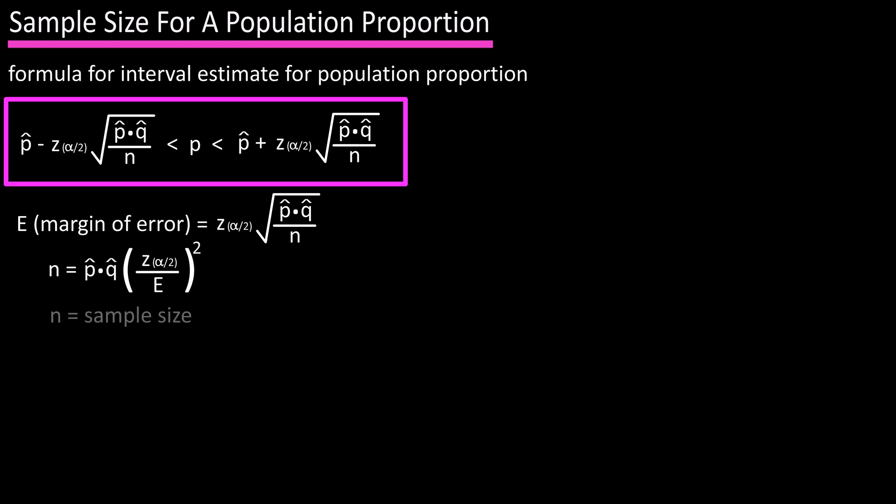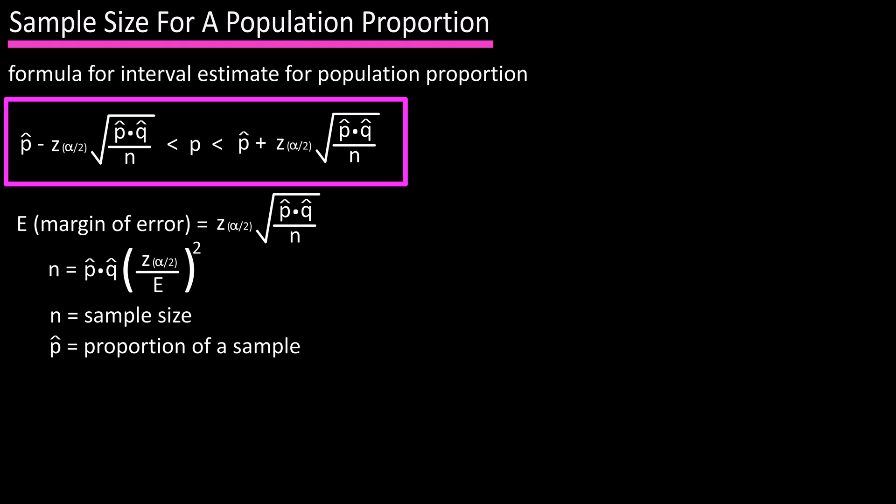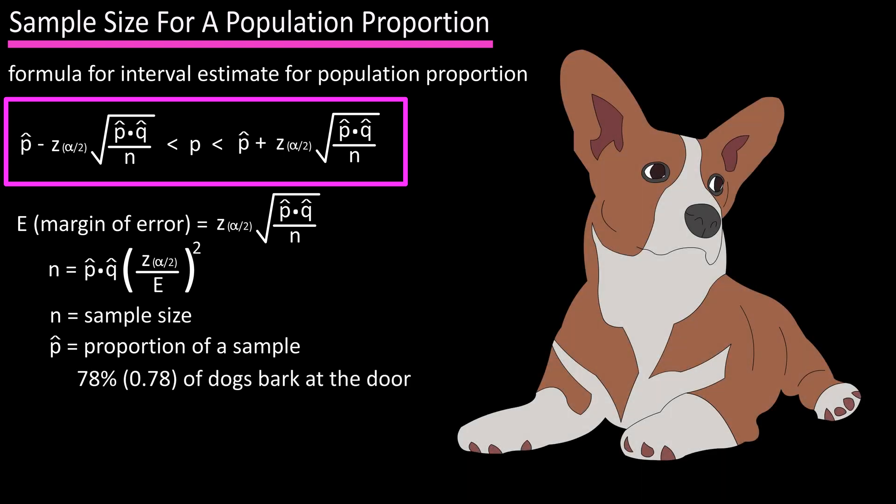In this formula, n equals the sample size, p hat is equal to the proportion of a sample. For example, 78 percent of dogs bark when the doorbell rings, so p hat would equal 0.78. q hat is equal to 1 minus p hat. So in our dog example, q hat would equal 1 minus 0.78, which is 0.22.